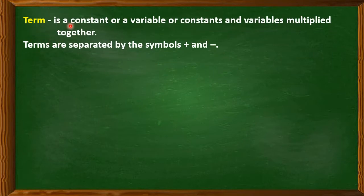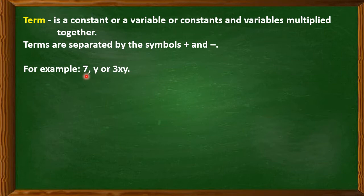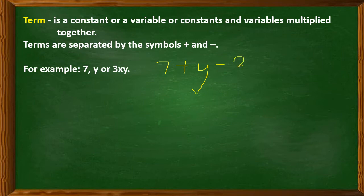Next, term. A term is a constant or a variable, or constants and variables multiplied together. Terms are separated by a plus or minus sign. For example, we have 7, y, or 3xy as examples of a term. If we write 7 plus y minus 3xy, then we have 3 terms: 7 is the first term, y is the second term, and negative 3xy is the third term.